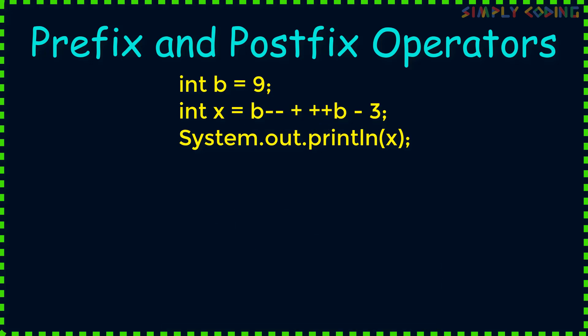Let's take the second equation now. First we encounter a postfix. So we substitute the value 9 first and then decrement the value of b to 8. Then we encounter another prefix. Since it is a prefix, we increment 8 to 9 and substitute that value. Then we copy minus 3 as is. Now when you solve it, you get 15 as the answer.